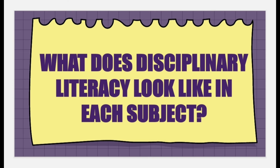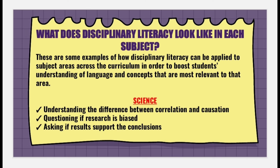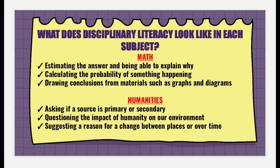What does disciplinary literacy look like in each subject? These are some examples of how disciplinary literacy can be applied to subject areas to boost students' understanding of language and concepts most relevant to that area. In science: understanding the difference between correlation and causation, questioning whether research is biased, and asking if results support the conclusions. In math: estimating the answer and being able to explain why, calculating the probability of something happening, and drawing conclusions from materials such as graphs and diagrams. In humanities: asking if a source is primary or secondary, questioning the impact of humanity on our environment, and suggesting a reason for change between places or over time.